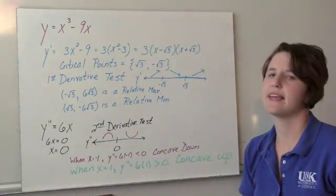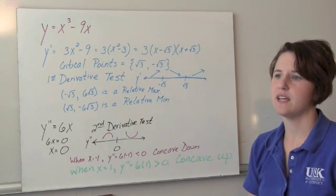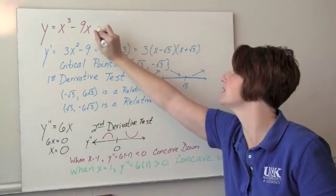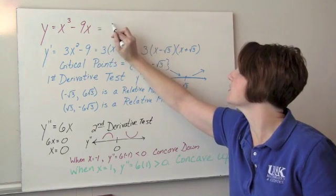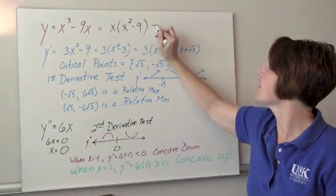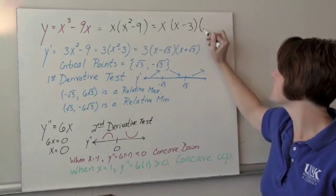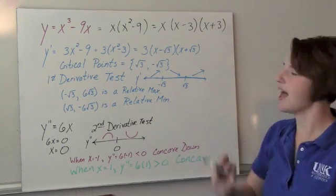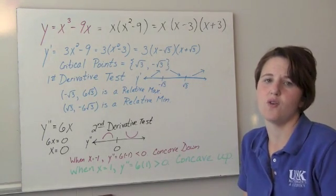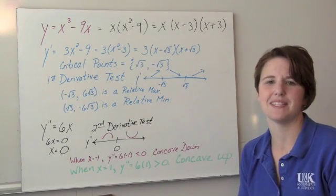That was the equation y equals x cubed minus 9x. Factoring to find intercepts: this is x times x squared minus 9, which factors as x times (x minus 3) times (x plus 3). So we have x-intercepts at negative 3, 0 and 3, and our y-intercept is also at the origin, (0, 0).